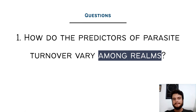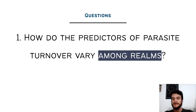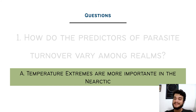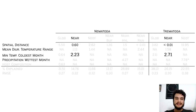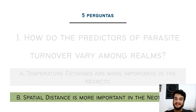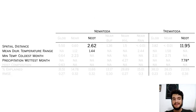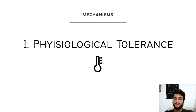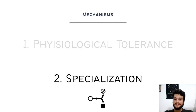We had five questions for this research, and I'm going to show you two of them. The first was: how do the predictors of parasite turnover vary among realms? We found that temperature extremes are more important in the Arctic — the minimum temperature of the coldest month was the strongest variable driving parasite turnover, both for nematodes and trematodes. In the Neotropics, spatial distance was the strongest predictor of parasite turnover, both for nematodes and trematodes.